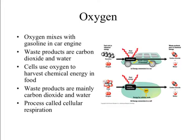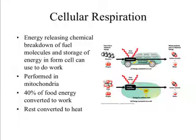This process is called cellular respiration, and we'll learn all about that in the next lecture. Cellular respiration is basically the process in which the cell breaks down food molecules to release energy and stores it in a form the cell can use to do work. It is performed in the mitochondria. Just like cars, it's not that efficient — only 40% of our food energy can be converted to do cellular work. The other 60% is converted to heat, making us a little more efficient than cars, but still not quite efficient.